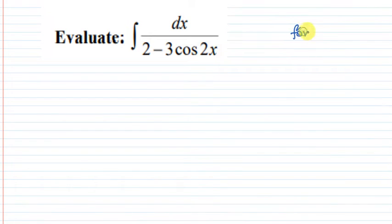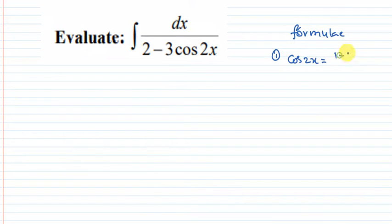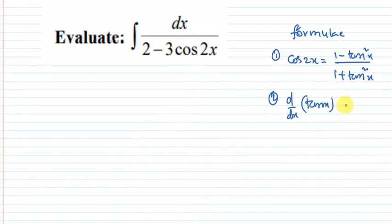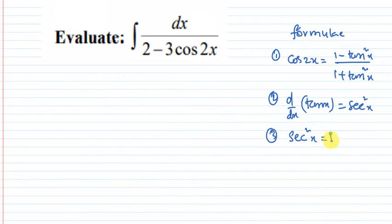Round formulas: first formula, cos 2x equals 1 minus tan squared x divided by 1 plus tan squared x. Second formula: d/dx of tan x equals secant squared x. Third formula: secant squared x equals 1 plus tan squared x.